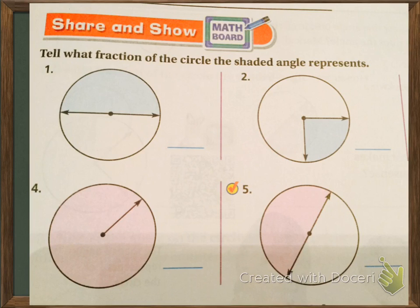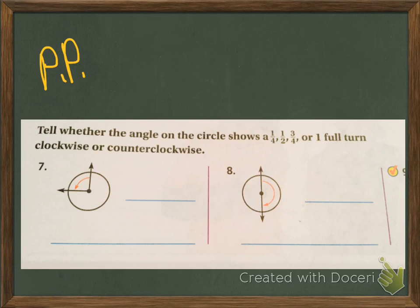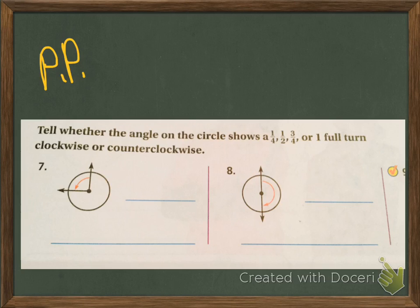Here are some practice problems for you to work on. You're going to tell what fraction of the circle the shaded angle represents. In these practice problems, I want you to tell me whether the angle of the circle shown is a one-fourth, one-half, three-fourths, or one full turn clockwise or counterclockwise around the circle. Please notice your red arrow. Hopefully what we've been able to do is allow you to say that you can relate angles and fractional parts of a circle, using the center point of the circle as the vertex of your angles.